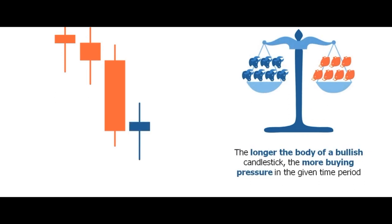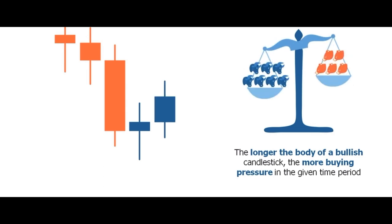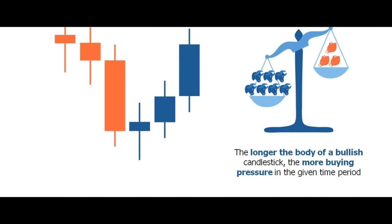This is the same when bullish candles form. As the sentiment changes and more bulls enter the market, a bullish candle will begin to form. The small blue candlestick shows that there is more or less a balance between bulls and bears, but with slightly more pressure from the bullish side. As more bulls enter the market, the body of the bullish candlestick will grow larger as it pushes the price further up. Therefore, the longer the body of the bullish candlestick, the more buying pressure existed in the market when that candlestick formed.